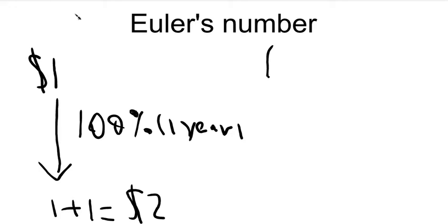So, in our case, it would be 1 plus 100% divided by n, to the power of n. n would be how many times you have your interest. So, this year, we only had it once. But in the second example, we had it two times per year.